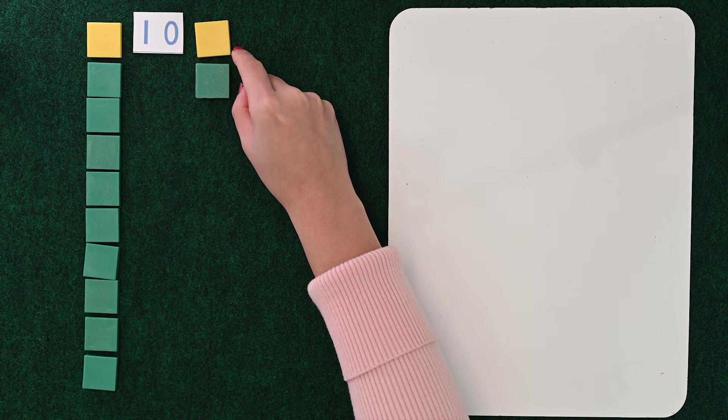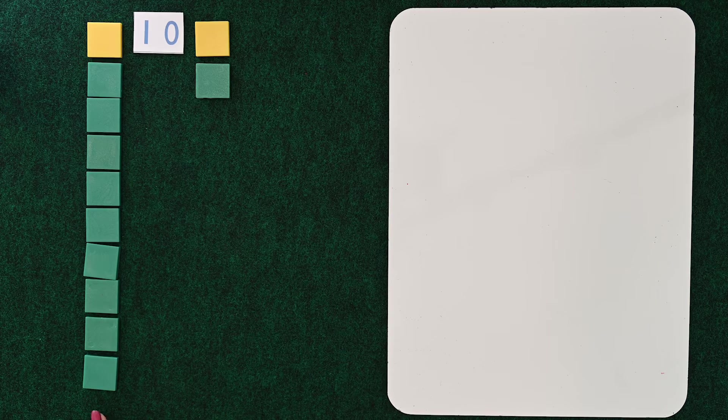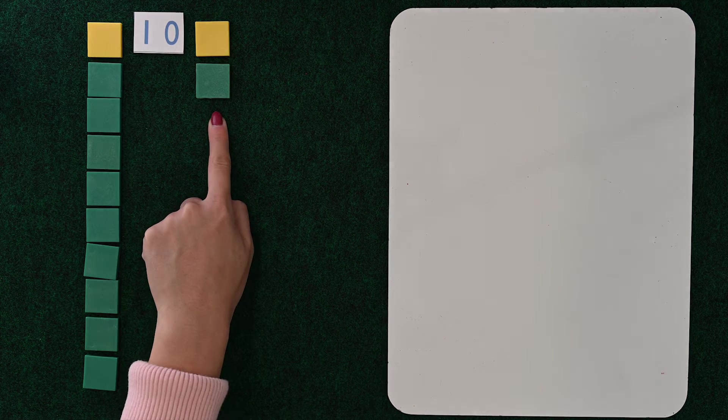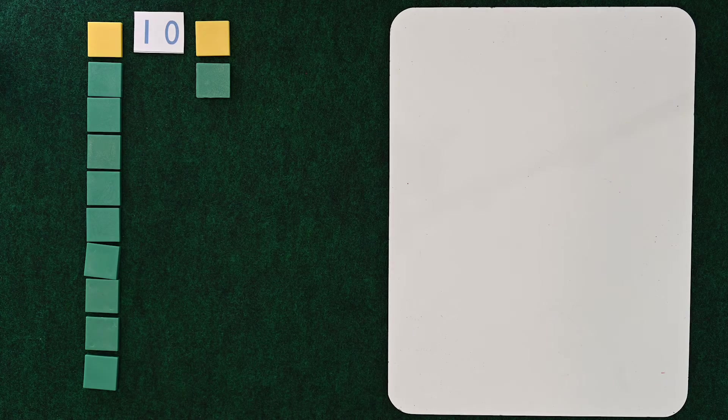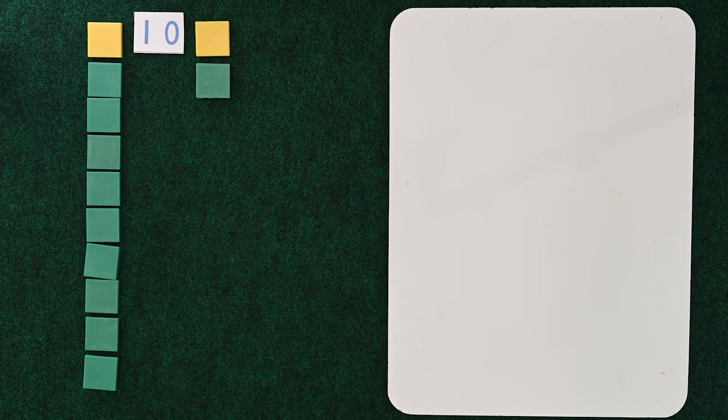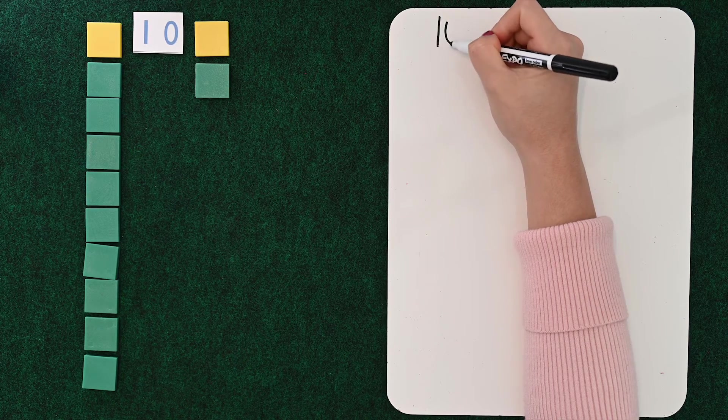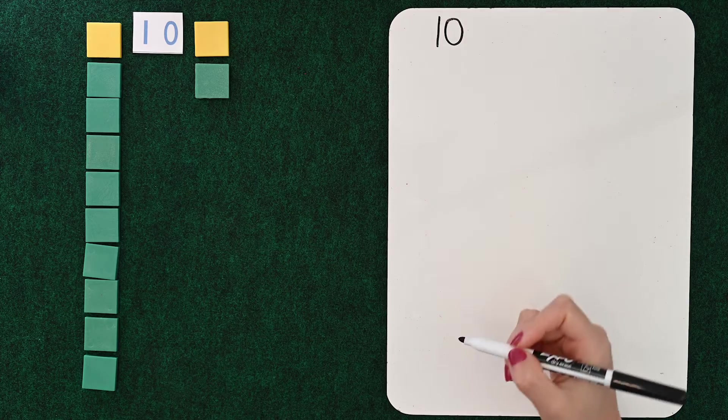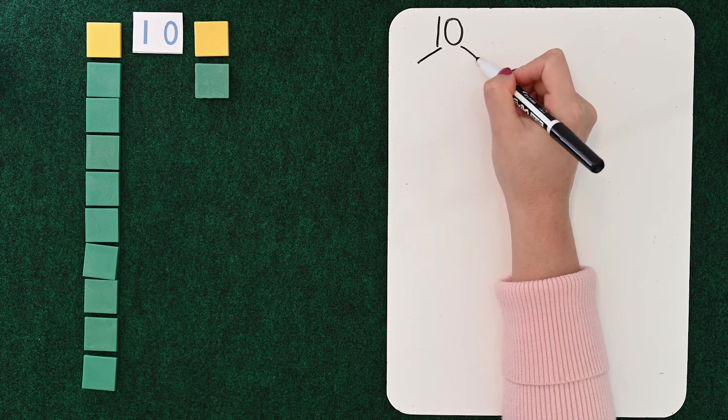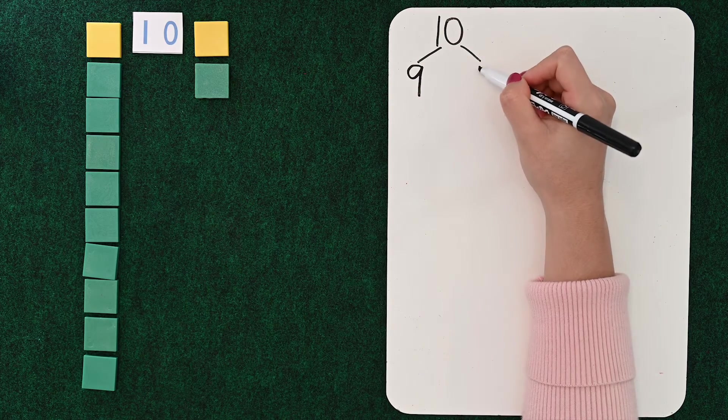So to give out these 10 cookies, kid one has 9, kid two has 1. You might think that that's not fair, but it's going to change eventually. So let's write down our 10 fact.